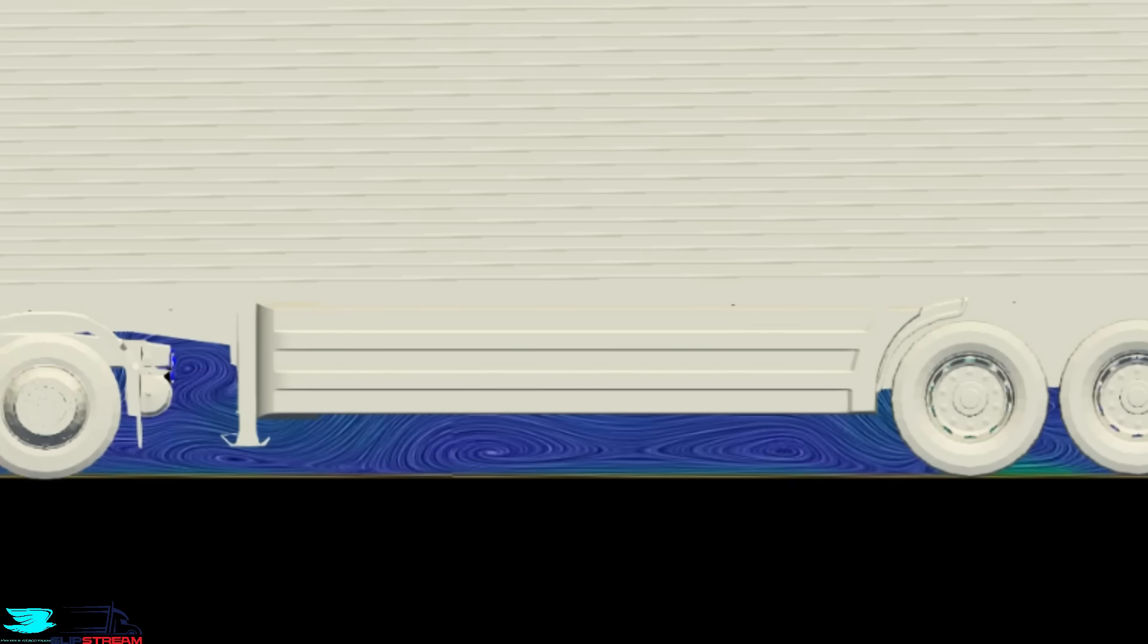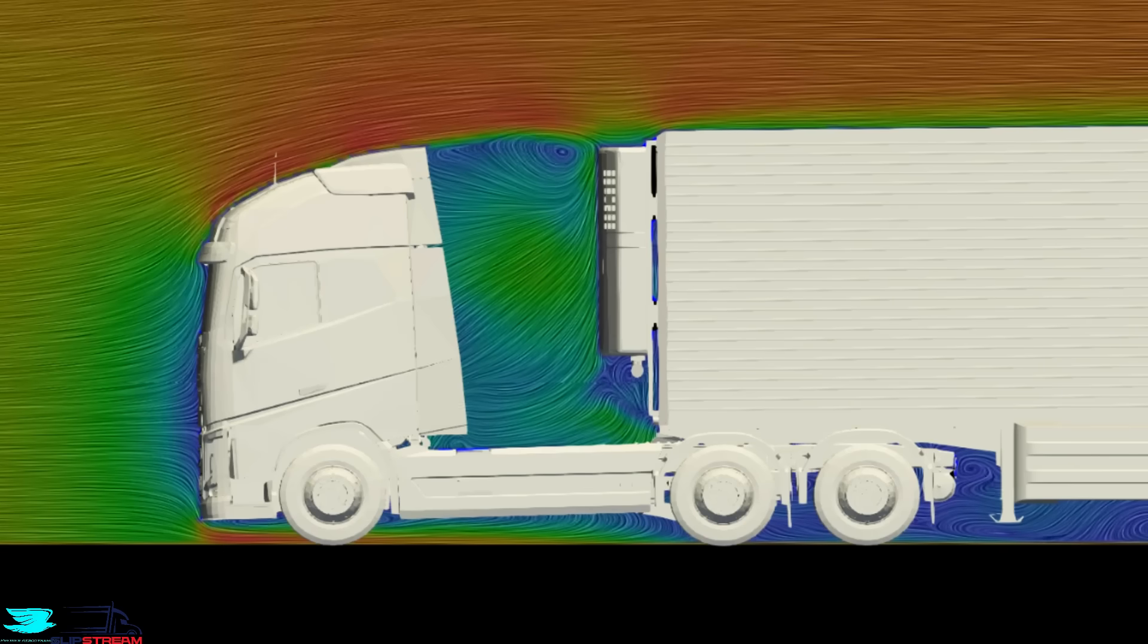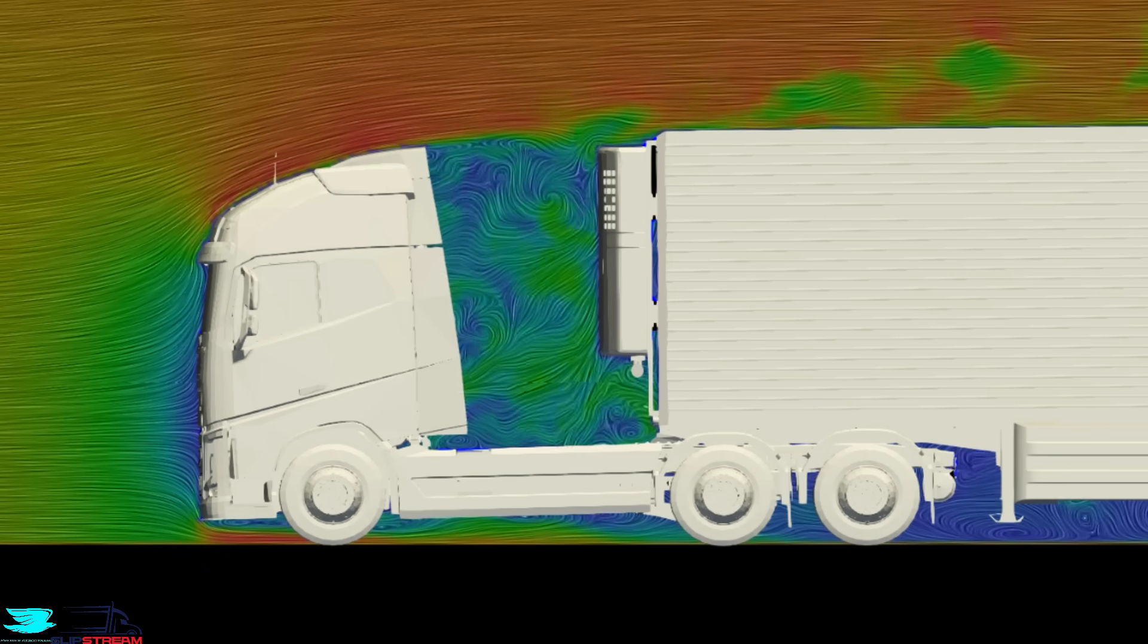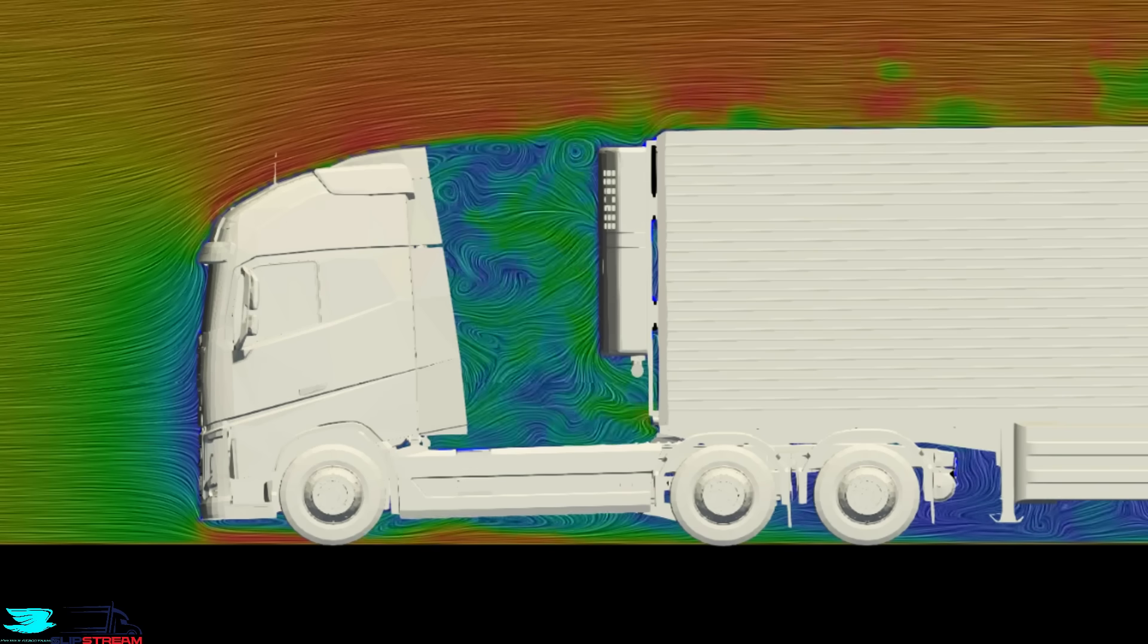So the skirts run from just behind the middle wheels up into the rear wheels mudguards. The flow on the front and top of the truck is pretty much the same with and without the skirts. What that tells us is that the skirts are not affecting the flow far away from them.